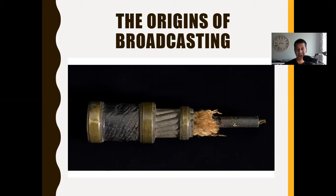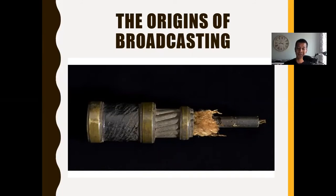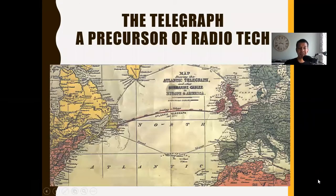The telegraph represents the origins of broadcasting. If we think about the first electronic medium that changed how we communicate — because it sped up communication — it is the telegraph wire. The telegraph, invented by Samuel Morse in 1844, allowed messages to be sent electronically, so they no longer had to be carried from place to place. The telegraph was the precursor of radio technology.